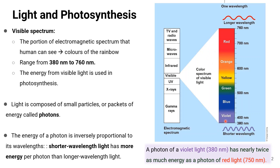The shorter wavelength, represented by violet light, has more energy — nearly twice as much energy as the photon of red light at 750 nanometers. The energy of a photon is inversely proportional to its wavelength, so shorter wavelength light has more energy per photon than longer wavelength light.